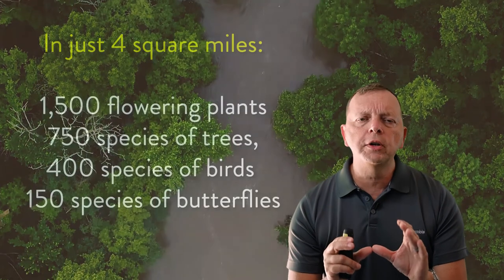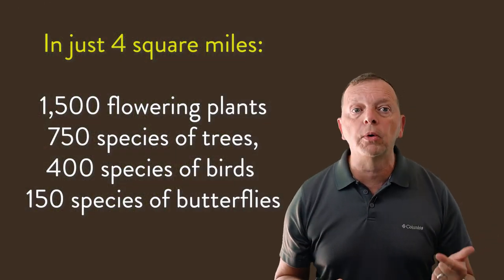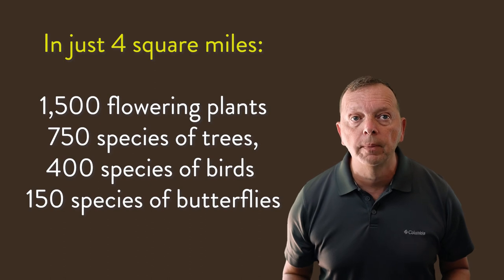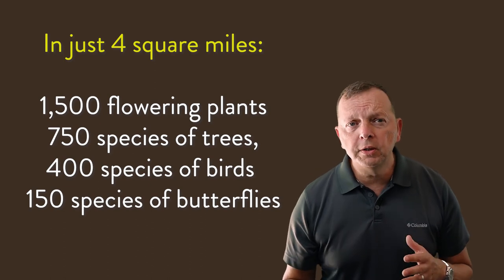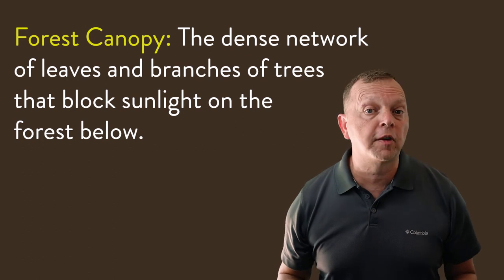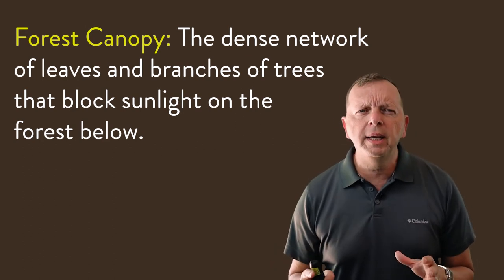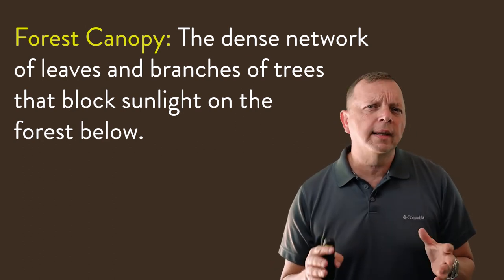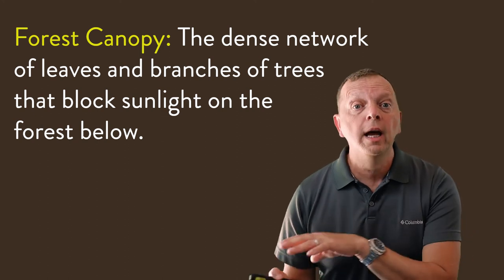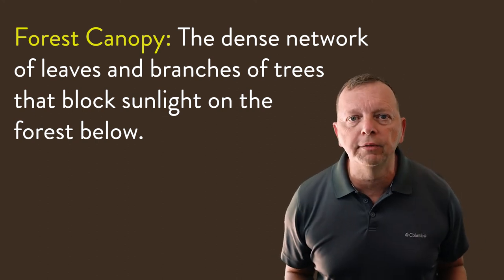In a tropical rainforest, in just four square miles, you can find literally thousands of different species of plants, birds, insects, and other animals. These different species of trees create different layers of canopies that block most of the sunlight from getting to the ground. Essentially, a tree canopy consists of the leaves and branches that provide shade below — kind of like an umbrella of leaves. The tallest trees create what is called an emergent layer, with trees as tall as 200 feet receiving the most daylight.